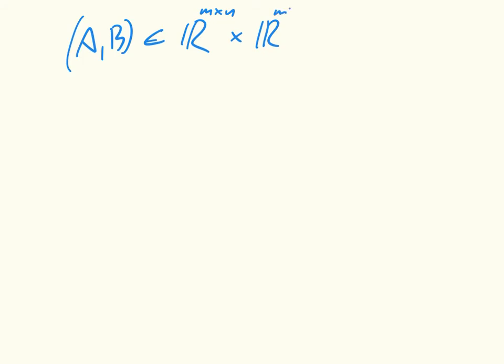in a cross product with itself, M times N. And we're just going to denote that shorthand to be M times N squared. And all that means is that A is an element of this and B is an element of that.